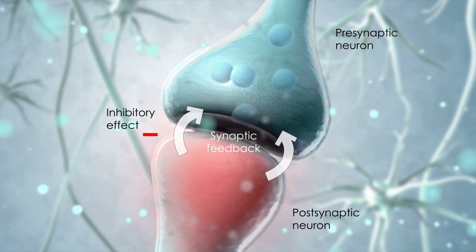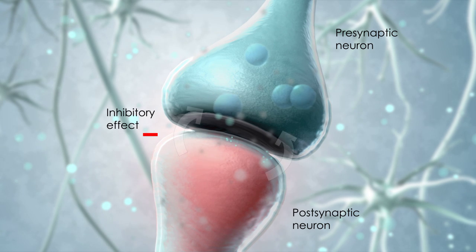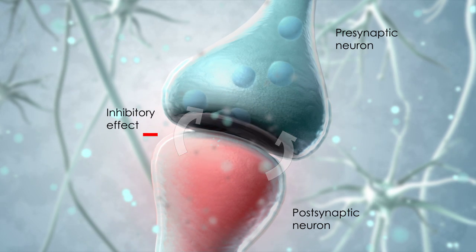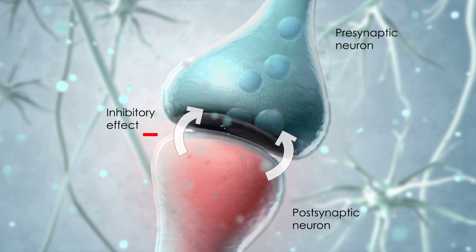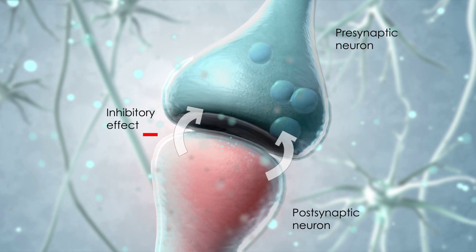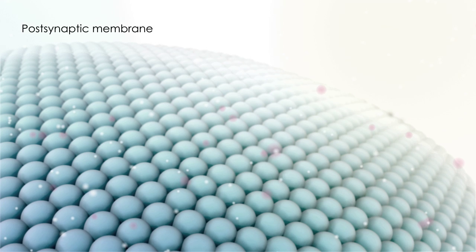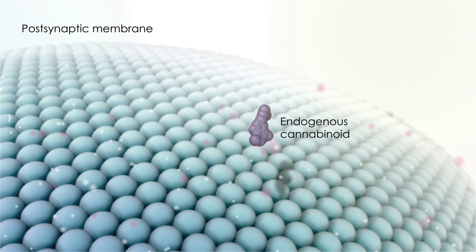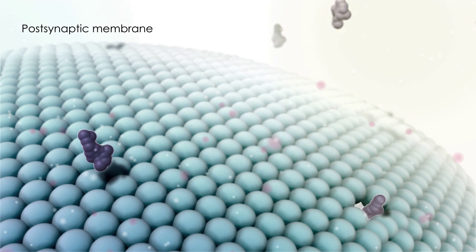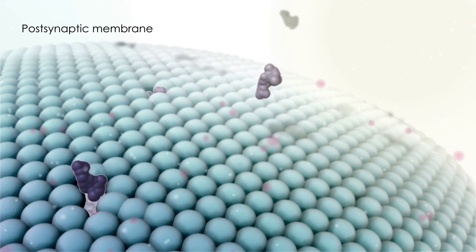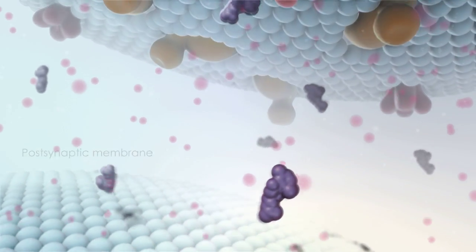A synaptic feedback mechanism is believed to be an inherent part of our normal neuroregulatory processes, including descending pain modulation. In many regions of the CNS, including the periaqueductal gray, the generation of postsynaptic action potentials is modified by an endogenous cannabinoid regulatory system. Endogenous cannabinoids are synthesized on demand from the phospholipid bilayer of the postsynaptic membrane. These lipophilic ligands are released directly into the synaptic cleft and act in retrograde fashion on the presynaptic neuron where the cannabinoid receptors are expressed.